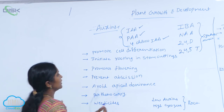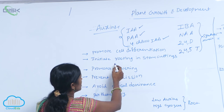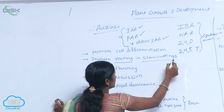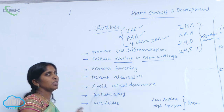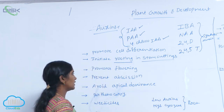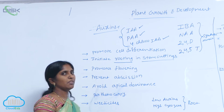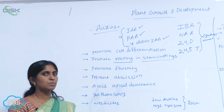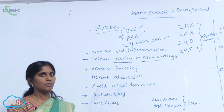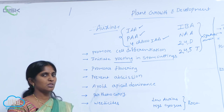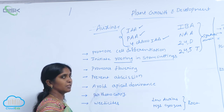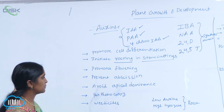Low concentration of auxin applications also promotes rooting in stem cuttings. Auxins also promote flowering. Additionally, they prevent abscission — meaning the unwanted shedding of leaves and fruits is prevented.